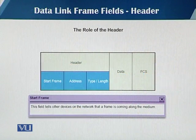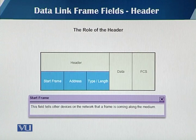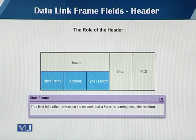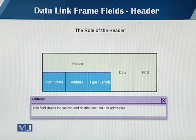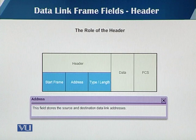As you can see on the slide, there is the role of a header and it is divided into three parts. The first is the start frame field — it tells the other devices on the network that a frame is about to start. Then we have the address field in the header, which is used to indicate the source and destination data link addresses.